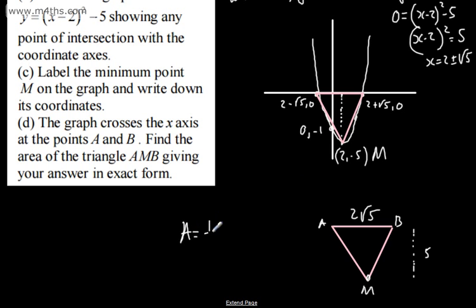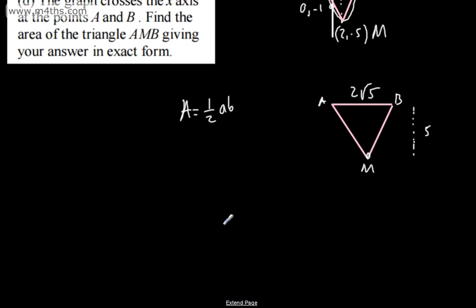So the area of the triangle is 1/2 AB, or you can write it base times height divided by 2. So the area is going to be the base, which is 2√5, multiplied by the height, which is 5, divided by 2. So we can see now in exact form, this is going to be, with the 2's cancelling off, 5√5, and that will be units squared. And that is the area.